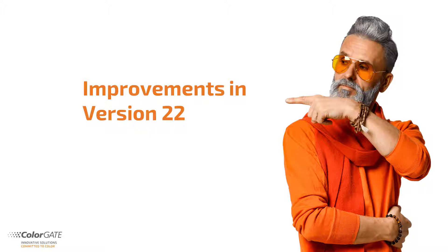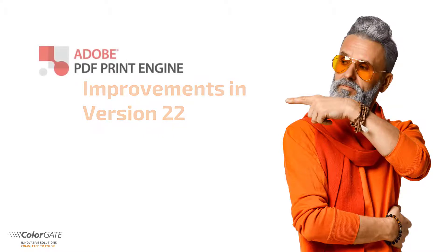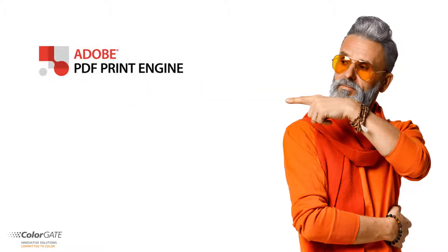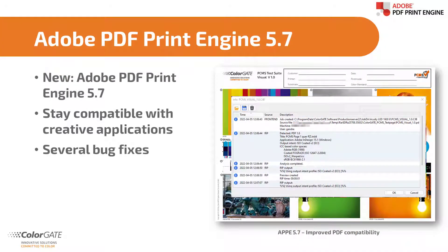I would like to present you some features and improvements of version 22. Our products are equipped with the Adobe PDF Print Engine — unless you use one of our Raster products. With version 22, we have updated the Adobe PDF Print Engine to the latest version 5.7. This is the leading PDF rendering engine and keeps you compatible with creative applications like Adobe Photoshop, InDesign or Illustrator — particularly when it comes to transparencies, overprinting, trapping and spot color handling.